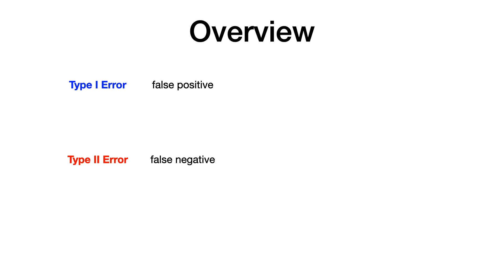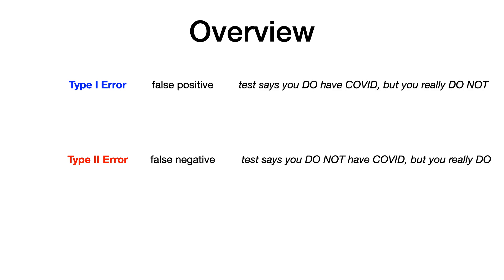A type 1 error would be if the test says that you do have COVID but you really don't, so it's a false positive. A type 2 error would be if the test says that you don't have COVID but in actuality you do. So you can see pretty quickly: type 1 is false positive and type 2 is false negative.